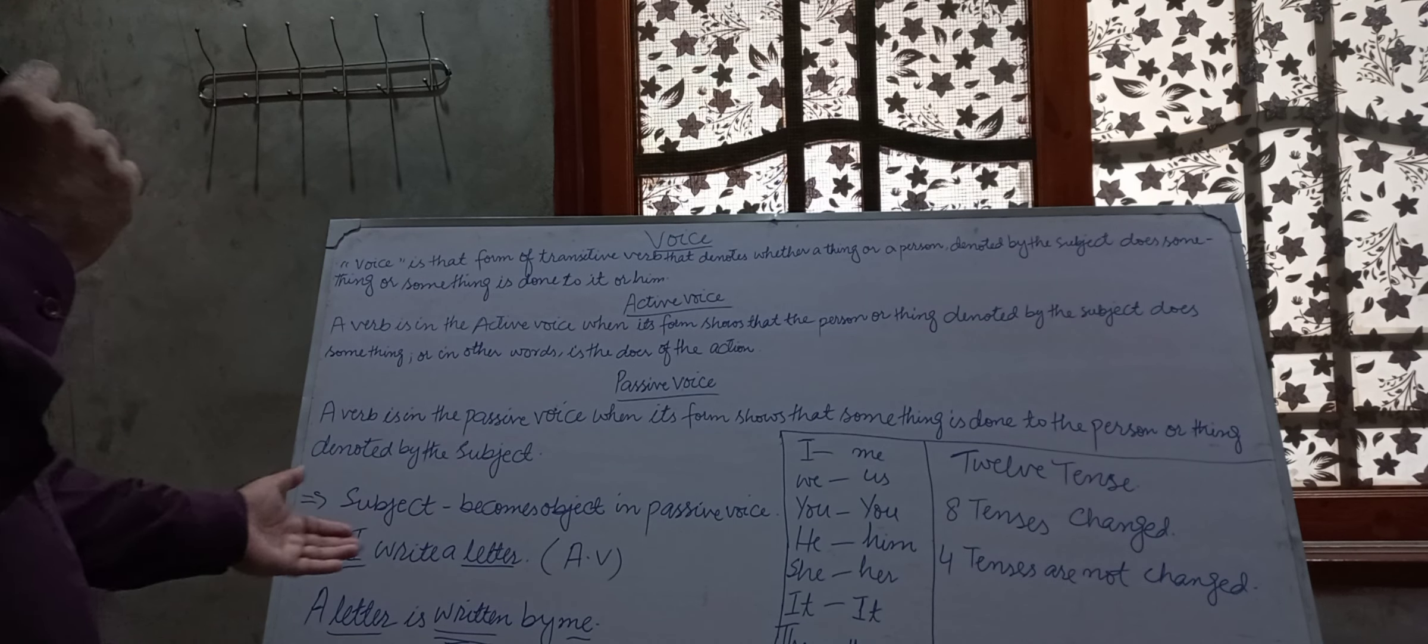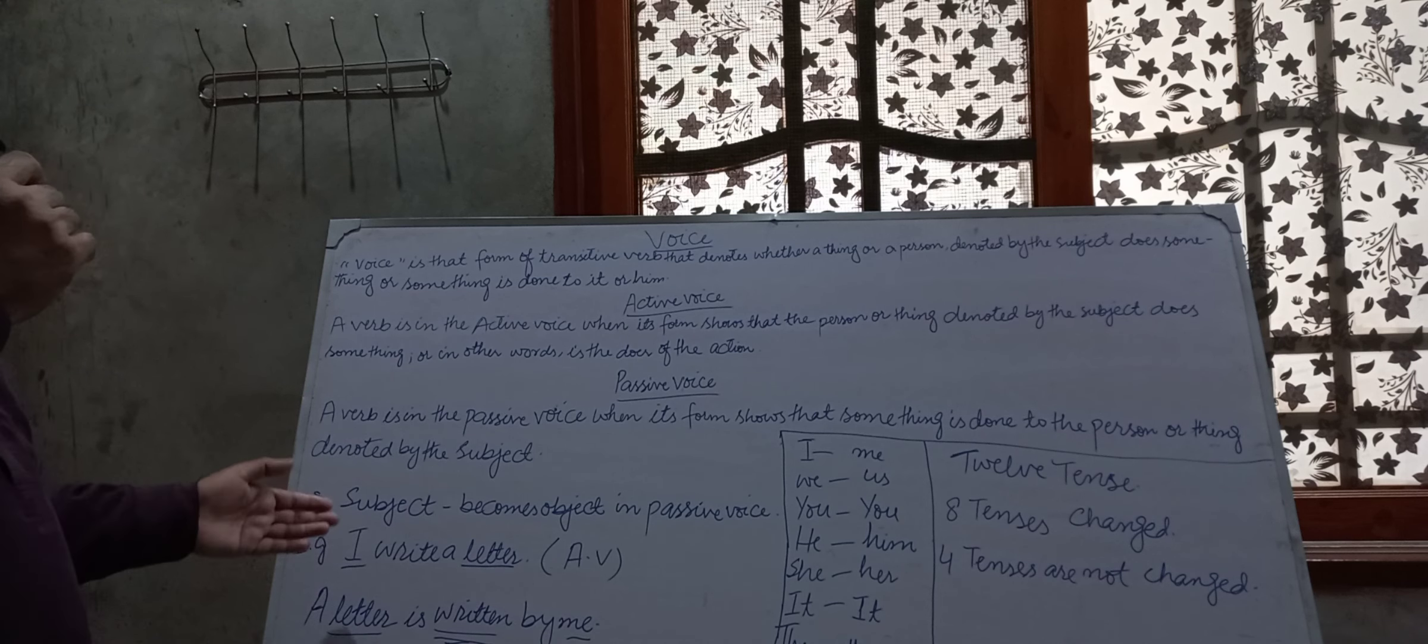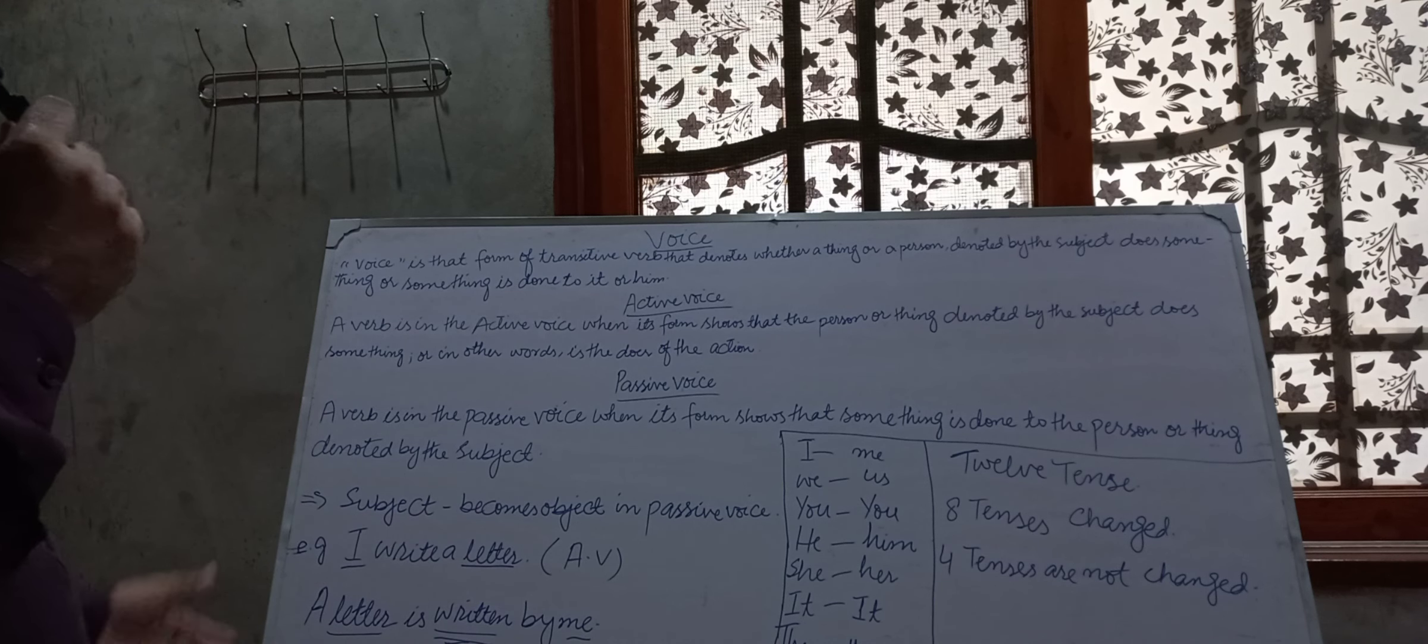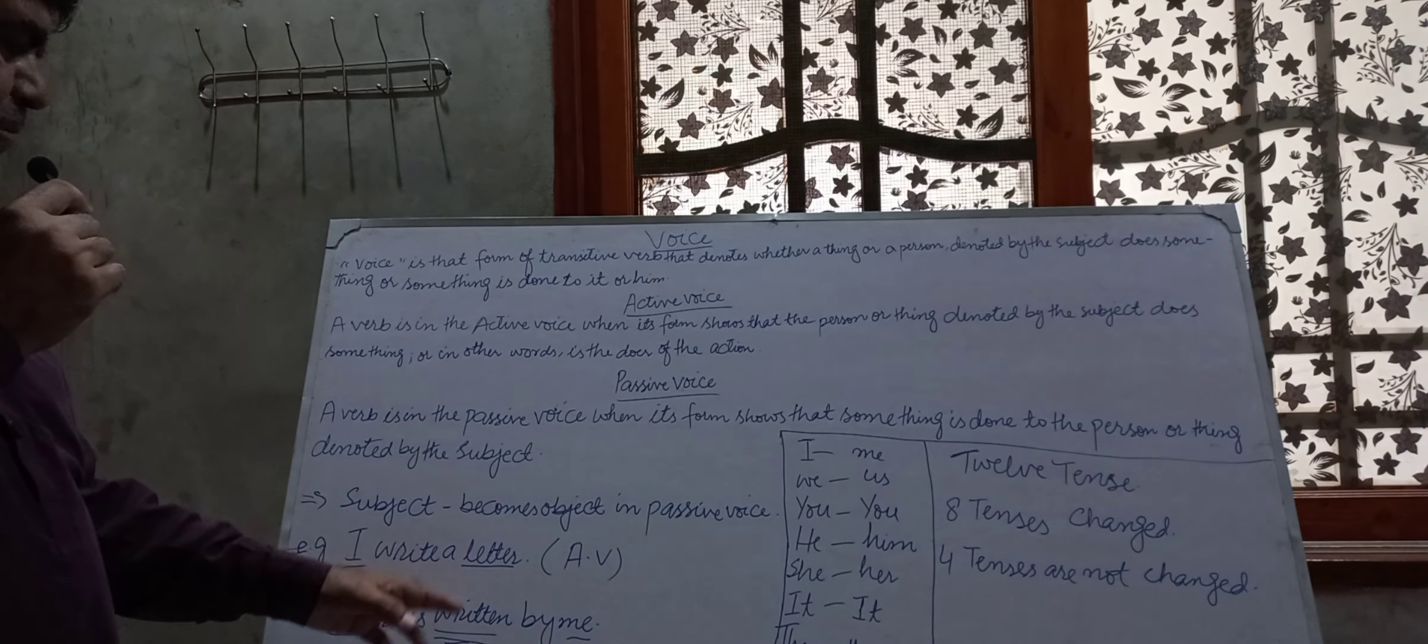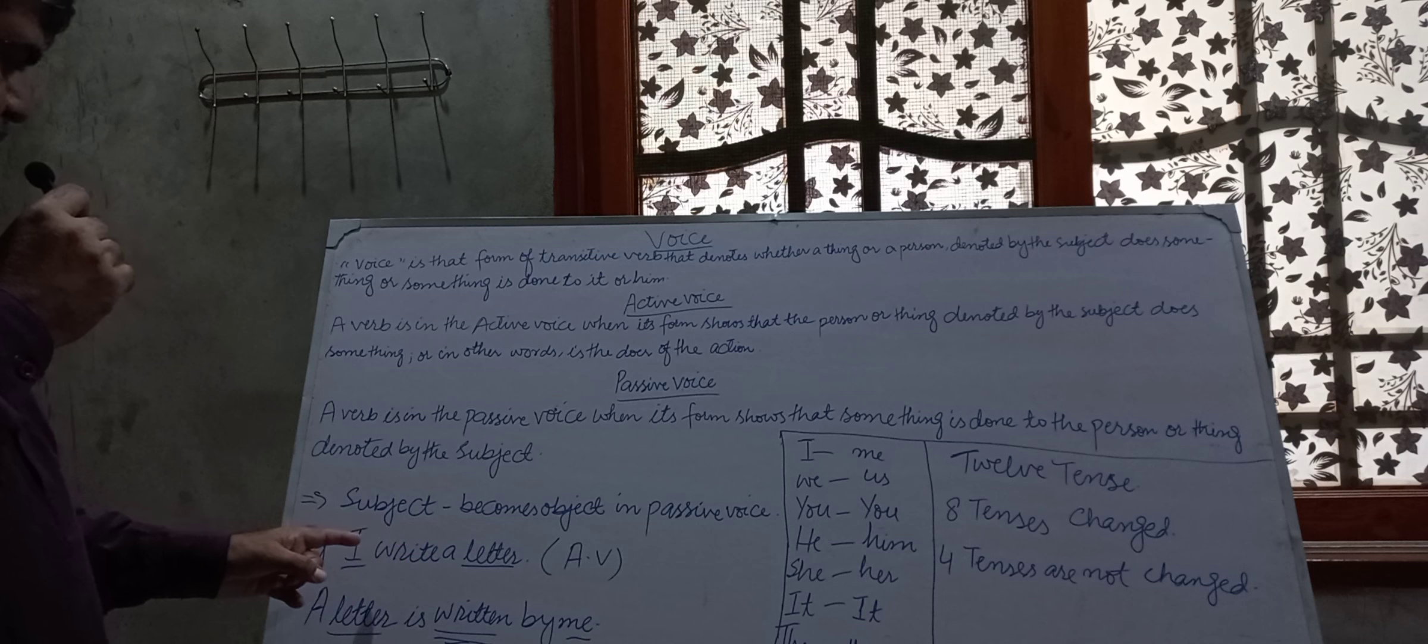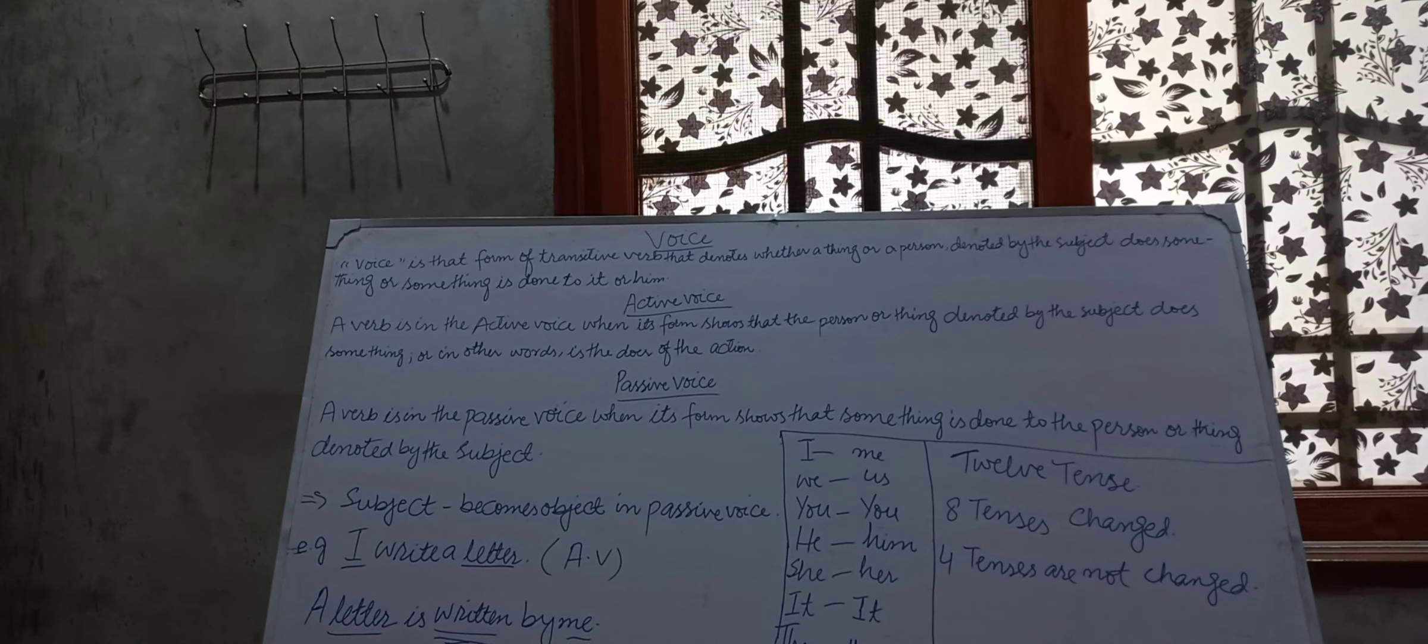For example: I write a letter. In active voice, I is the subject, a letter is the object. In passive voice: a letter is written by me.